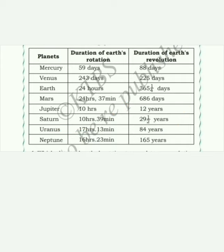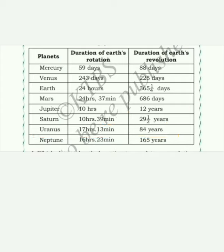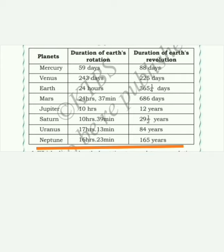The next planet is Uranus. Uranus takes 17 hours 13 minutes for rotation and 84 years for revolution. The last planet is Neptune. Neptune takes 16 hours 23 minutes for rotation and 165 years for revolution.